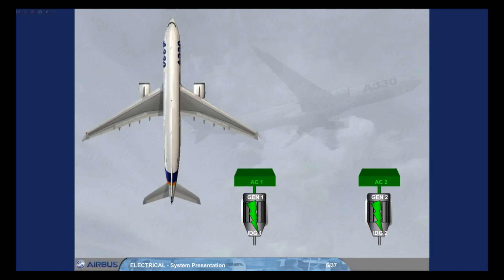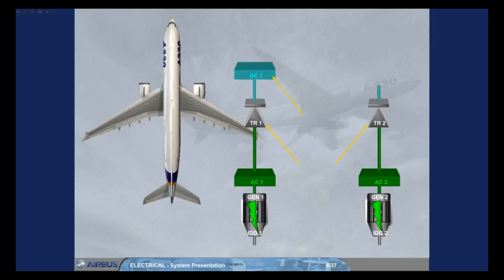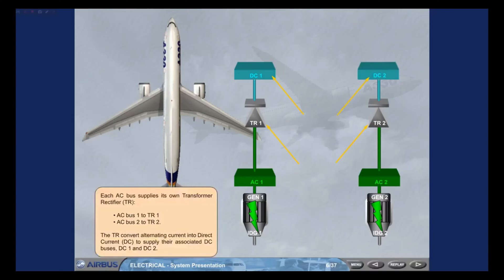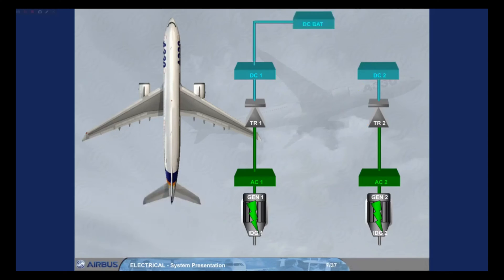Each AC bus supplies its own transformer rectifier, TR. AC bus 1 to TR1, AC bus 2 to TR2. The TRs convert alternating current into direct current, DC, to supply their associated DC buses, DC1 and DC2. DC bus 1 then feeds the DC BAT bus. The DC BAT bus can charge the batteries or receive power from the batteries as required.